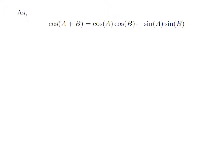As we know, the trigonometry identity cosine of a plus b is equal to cosine of a into cosine of b minus sine of a into sine of b.